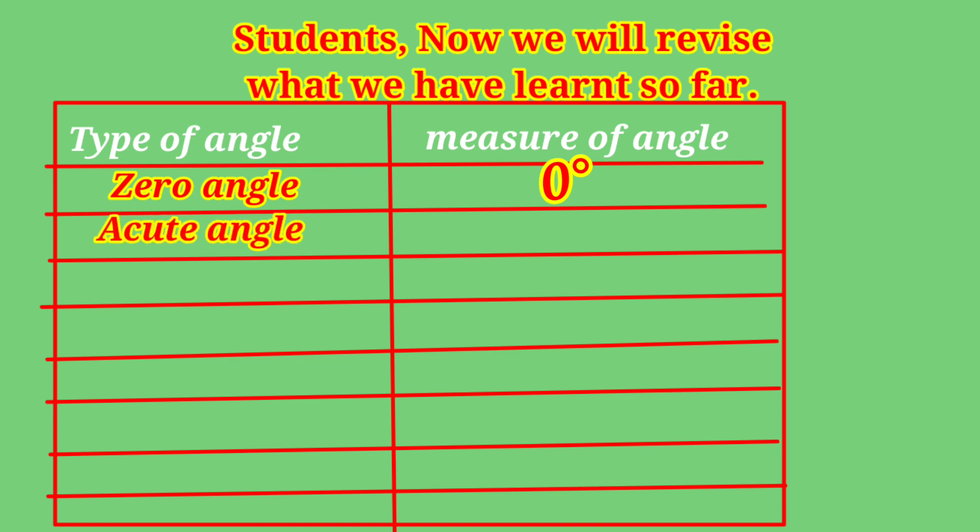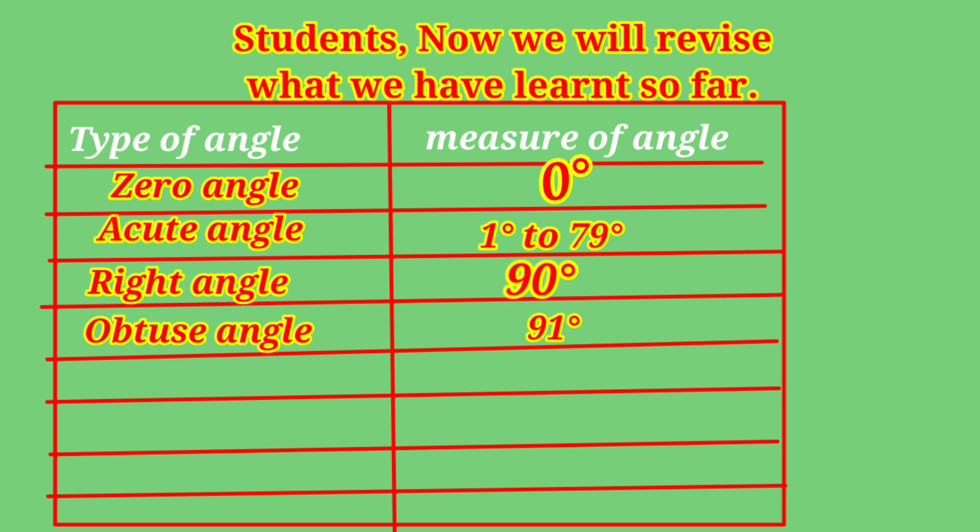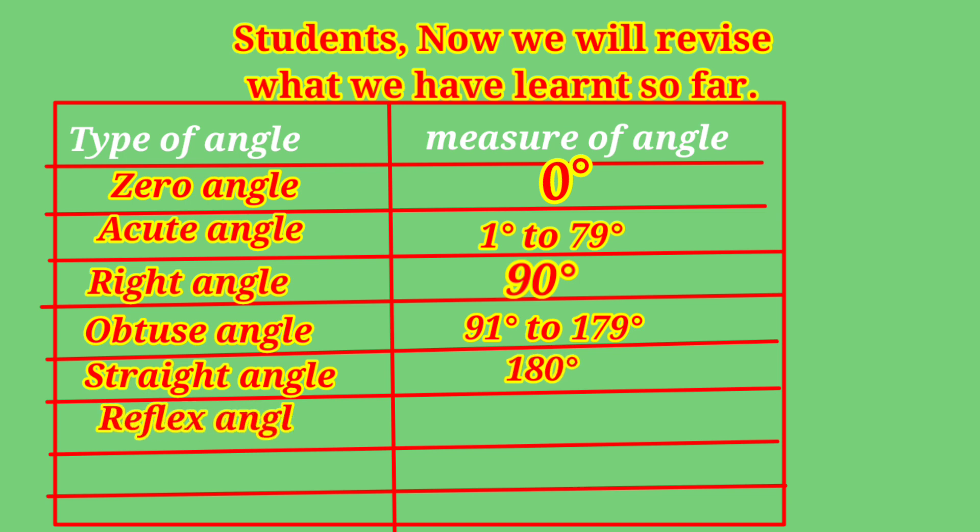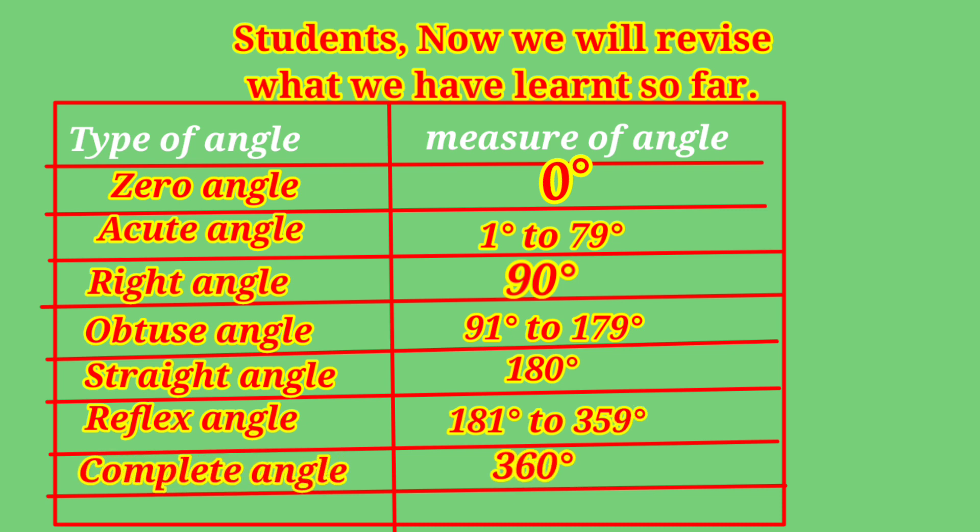Zero angle is always zero degrees. Acute angle is 1 to 79 degrees. Right angle is always exactly 90 degrees. Obtuse angle is between 91 to 179 degrees. Straight angle is exactly 180 degrees. Reflex angle is between 181 degrees to 359. Complete angle is exactly 360 degrees.